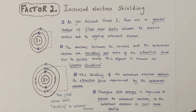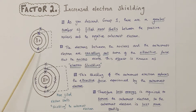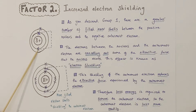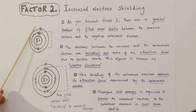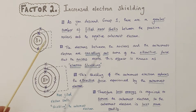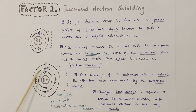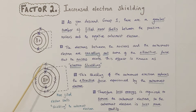The second factor when explaining the increased reactivity of the group 1 elements as you descend the group is something called electron shielding. This first diagram is of lithium, and you can see it has one shell between the nucleus and the outermost electron with two electrons in it. The sodium diagram has two electron shells between the nucleus and the outermost electron, with two and eight electrons respectively.